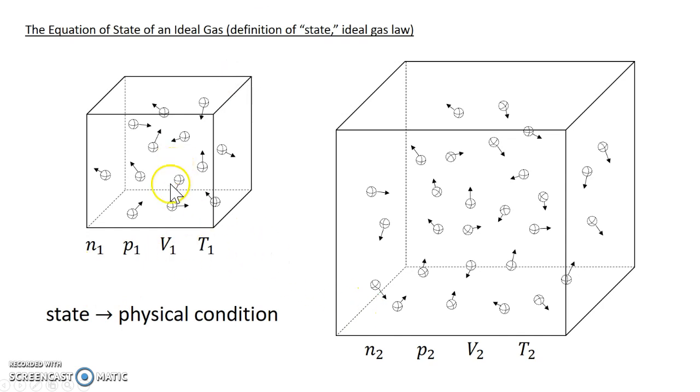Even though the numbers can change, maybe this is a volume of 400 milliliters and this is 900 milliliters, even though the numbers change, these variables are always related by the same equation. You may know it as the ideal gas law,